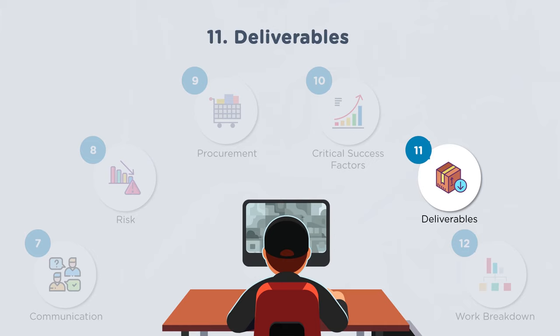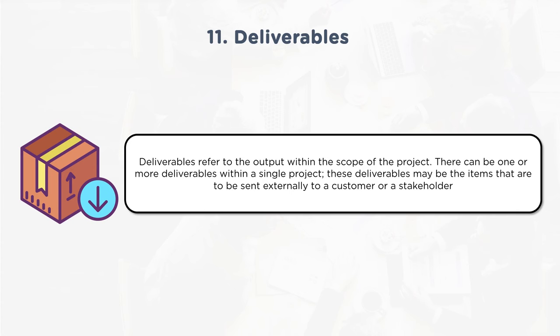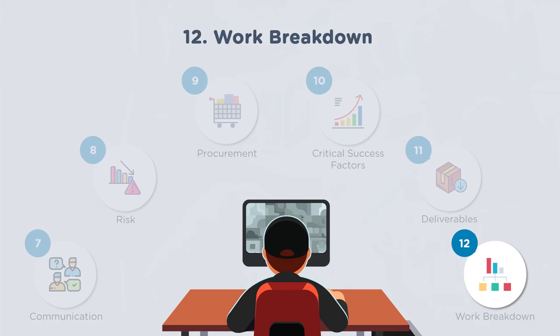Deliverables are the outputs of the project — a product, service, or result within the project's scope. There can be one or more deliverables in a single project, some sent externally to customers or stakeholders. Each deliverable has a defined scope and specification, must be measured and tested, and formally accepted. If there is a deviation, it goes back for correction through quality control processes.